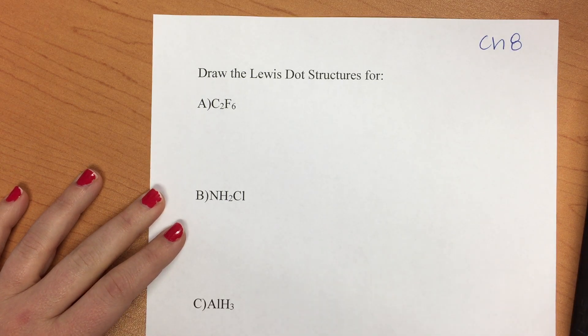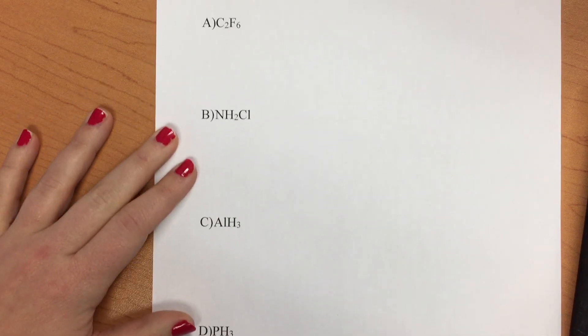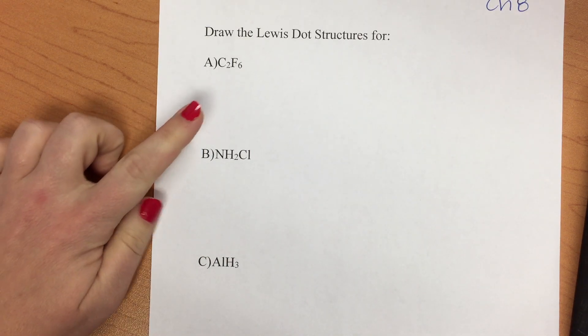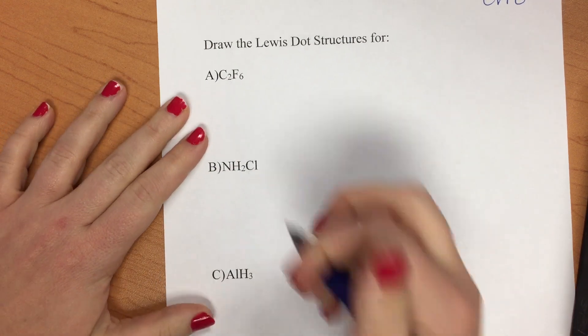Here are some examples on how to draw the Lewis dot structures. It turns out that there are three different elements or compounds that we're going to work on. So the first thing you want to do is calculate the number of valence electrons.